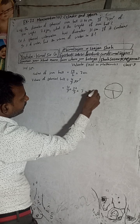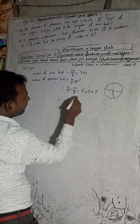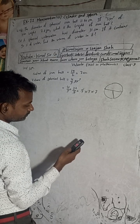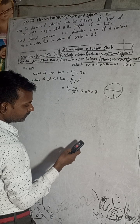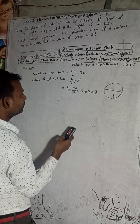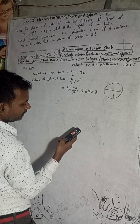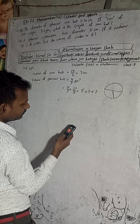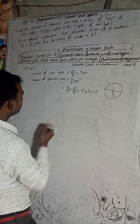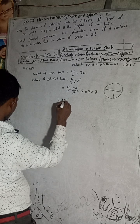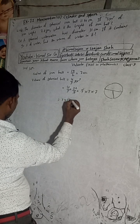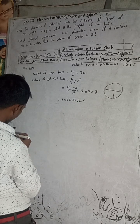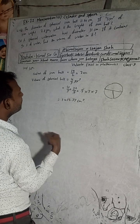Working through the calculation: 7 cubed gives us 7 × 7 × 7. The 7 cancels with the denominator, leaving 49 × 49. Then 49 × 22 divided by 3 gives us approximately 1437.33 cm³. So the volume of the spherical ball is 1437.33 cm³.